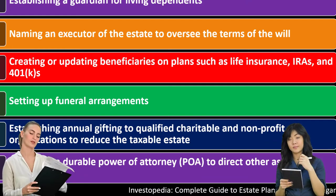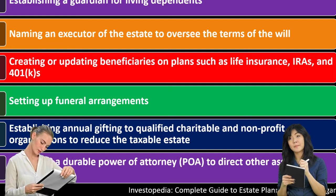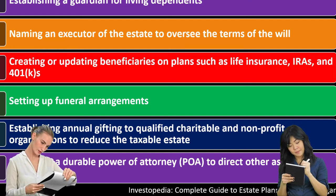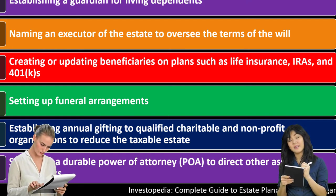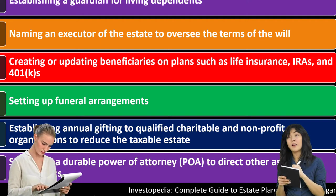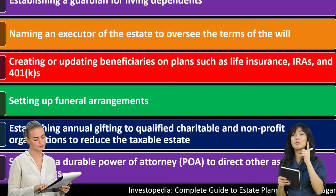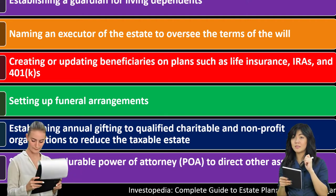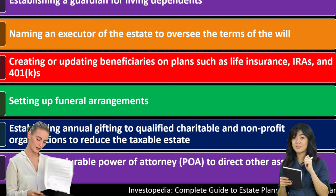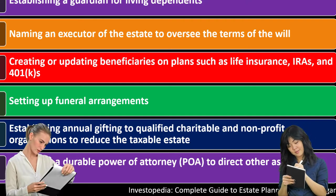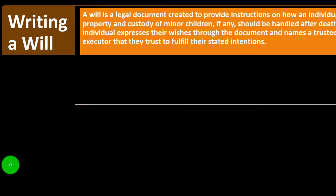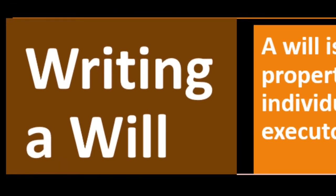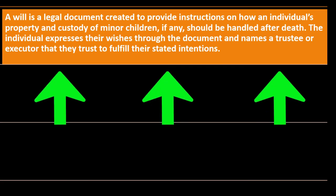For someone else to act on your behalf you have to give them a power of attorney — similar to a legal situation where you want someone to make decisions on your behalf and you give them authority in a particular area. A similar concept applies with the POA for estate planning.